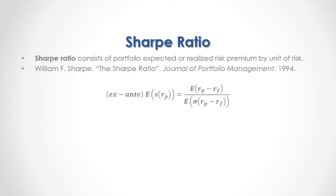As a formula, first we have the ex-ante Sharpe Ratio, in which the expected portfolio return Sharpe Ratio equals, within the numerator, the expected risk premium — that is, portfolio returns minus the risk-free rate of return — which is then divided by the expected risk premium standard deviation.